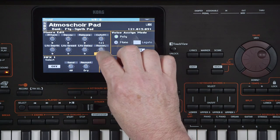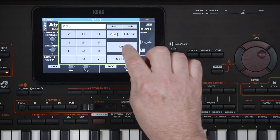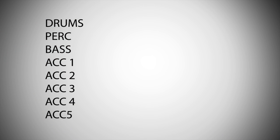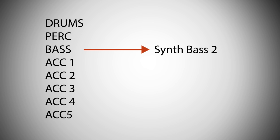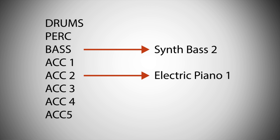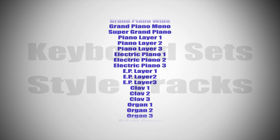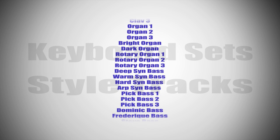In the next chapter, we'll look at styles where you'll see that sounds are also used by the different tracks of the style accompaniment. For example, the bass track might use a synth bass sound, another track might use an electric piano sound, etc. So basically, the keyboard sets and style tracks are all accessing the same library of sounds inside your PA-4X, and there are hundreds of sounds to choose from, so the possibilities are endless.